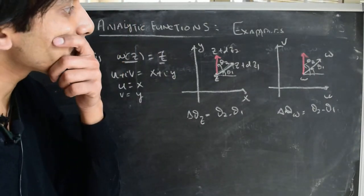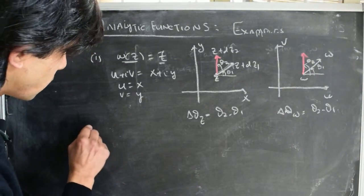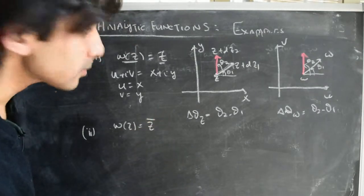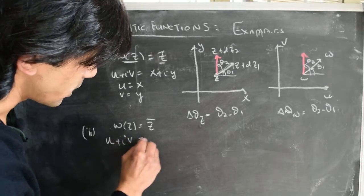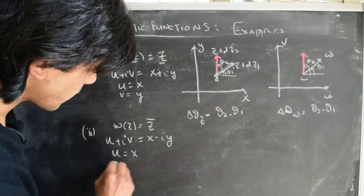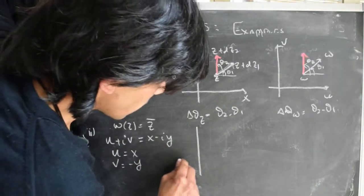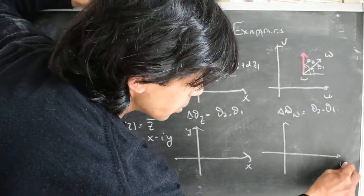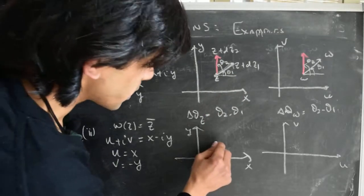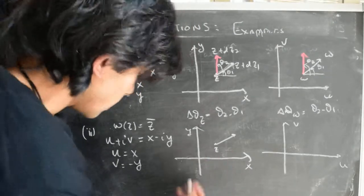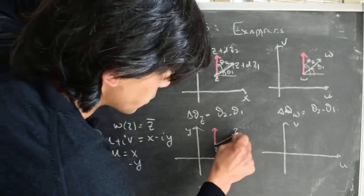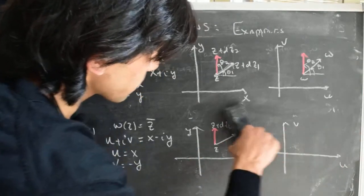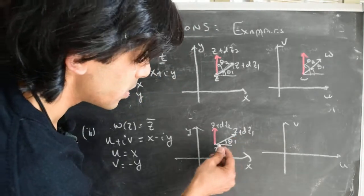Now let's look at another mapping we've considered: the complex conjugate, w(z) = z̄. If w = u + iv and z = x + iy, then u + iv = x − iy, so u = x and v = −y. Let's draw the z-plane and w-plane, labeling the axes x, y and u, v. Starting at point z, we draw one infinitesimal vector from z to z + dz₁ and another from z to z + dz₂, making angles θ₁ and θ₂ respectively with the x-axis.